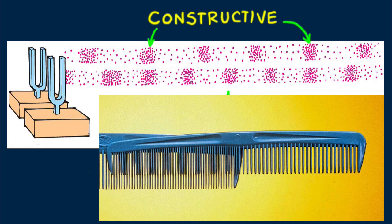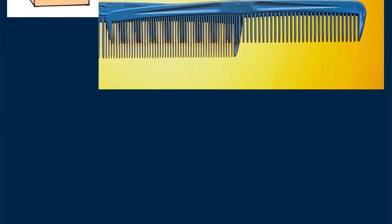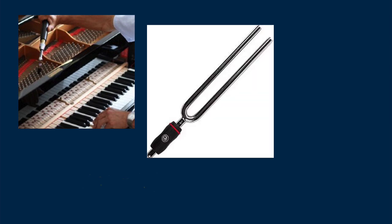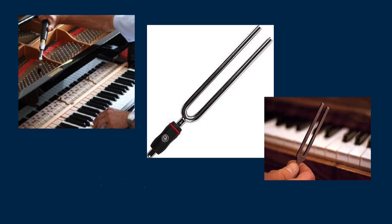Beats occur with any kind of wave and provide a practical way to compare frequencies. To tune a piano, a piano tuner listens for beats produced between a standard frequency and the frequency of a particular string on the piano. When the frequencies are identical, the beats disappear. Beats can help you tune a variety of musical instruments. Simply listen for beats between the tone of your instrument and a standard tone produced by a piano or some other instrument.